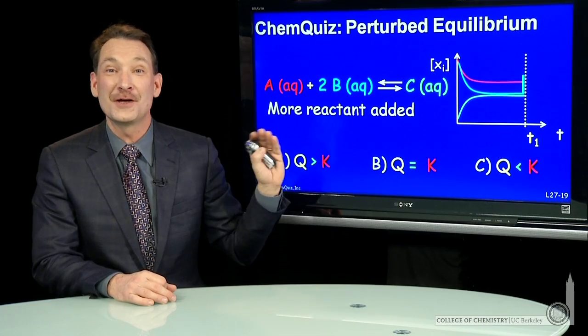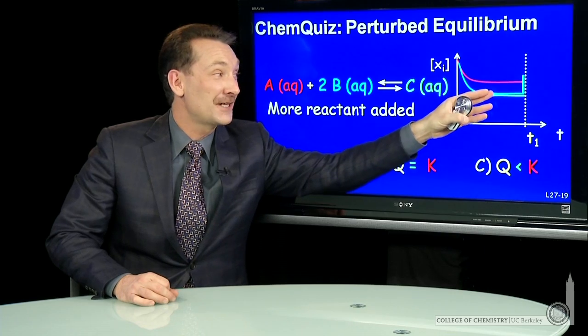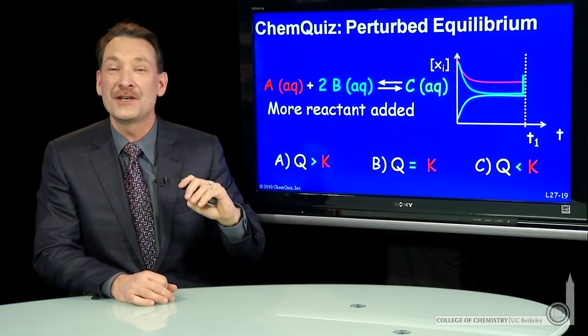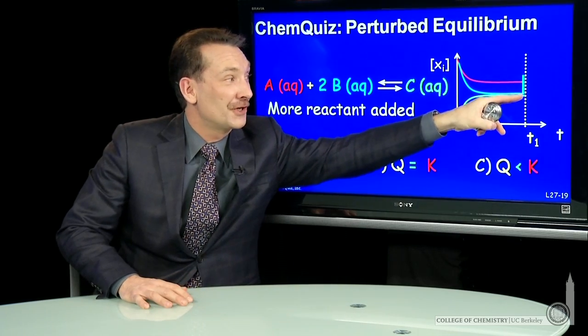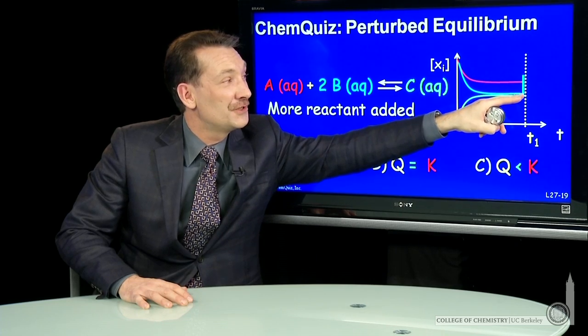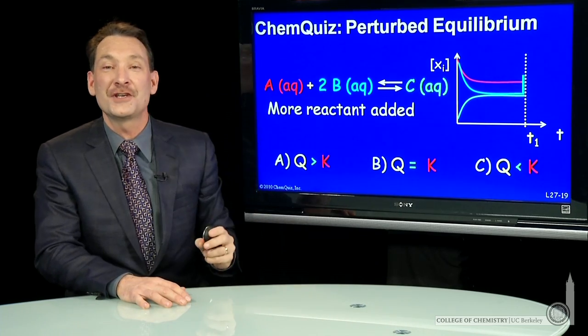We're looking at a reaction that was at equilibrium. Macroscopically, all the concentrations had stopped changing. And then a perturbation occurred. And it looks like that perturbation was to increase the concentration of B.